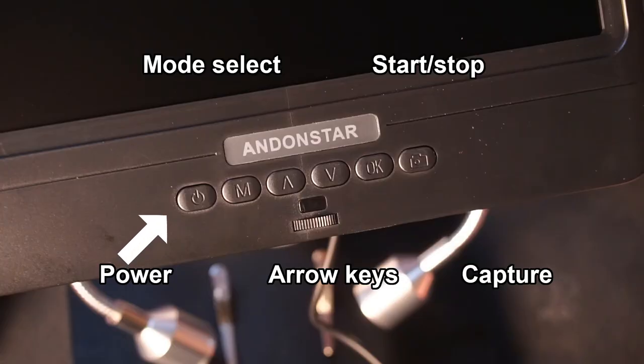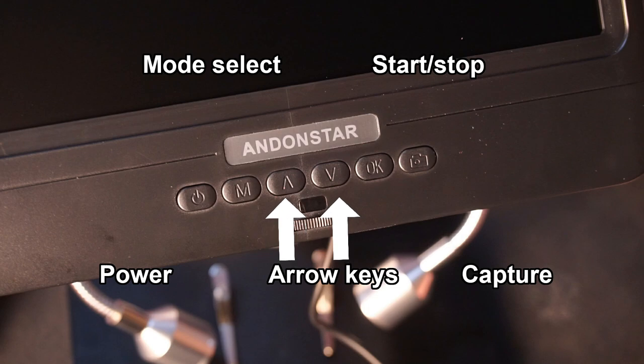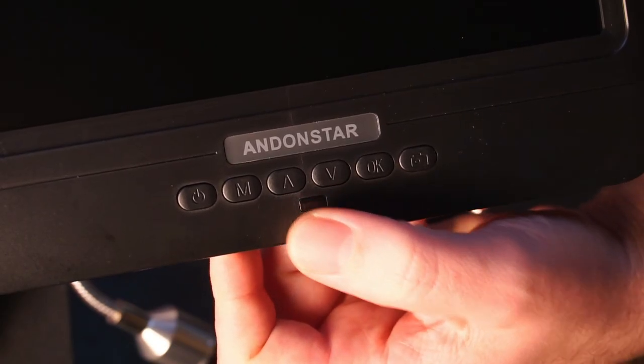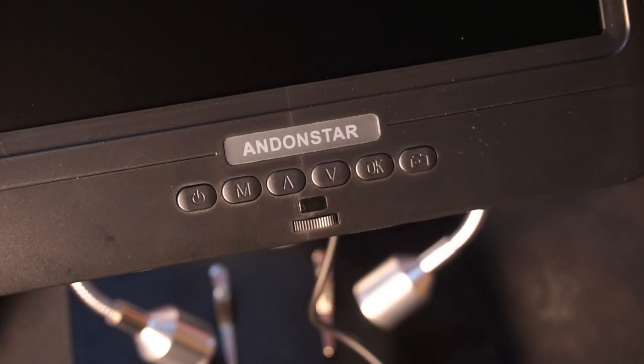At the front we have a power button, mode select to cycle through video camera and photo gallery, two arrow buttons for scrolling through the menu. The OK button is used for starting or stopping recording, and this button is used for capturing a photo. You can also control the brightness of the LED lights by turning this adjustment wheel.